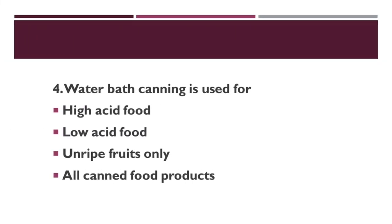Water bath canning is used for — Option A: high acid foods. Option B: low acid foods. Option C: unripe fruits only. Option D: all canned products. Correct answer: water bath canning is used for high acid foods. For low acid foods, pressure canning is used.